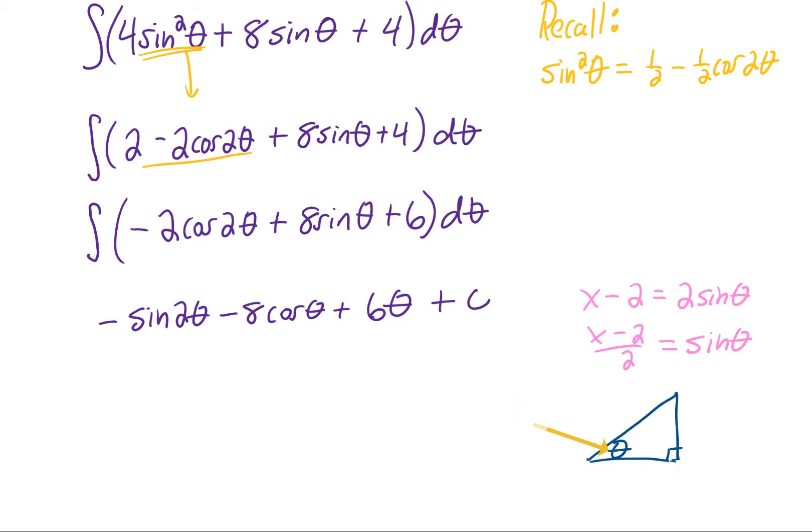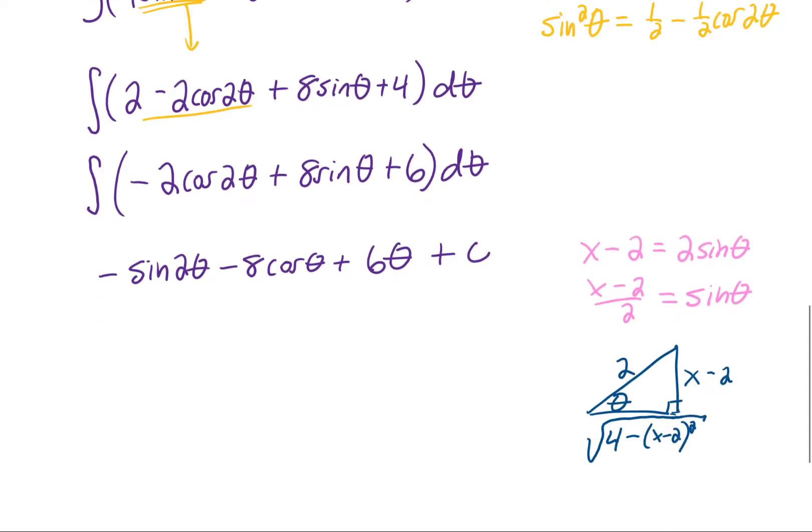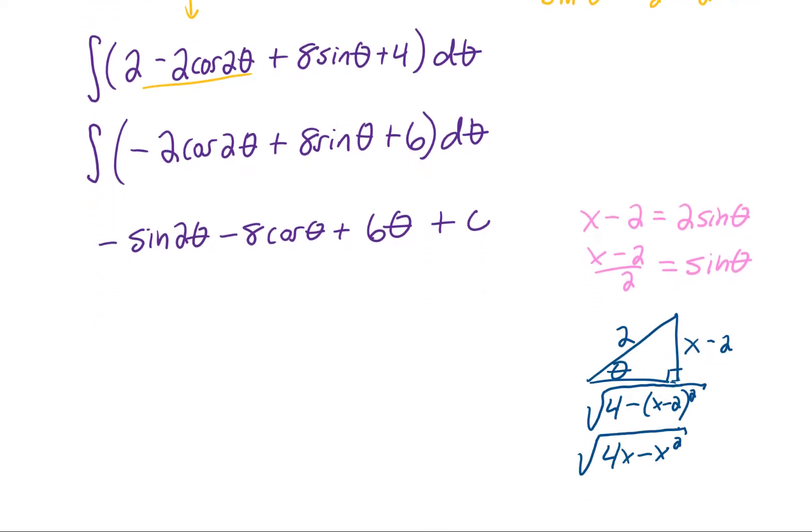If our theta happens to look like this, then the sine of that angle, or the opposite divided by the hypotenuse, is going to be x minus 2 divided by 2. Doing a quick Pythagorean theorem will give us the length of this side here. Simplifying that is going to give us the familiar term that we saw in the original integral.